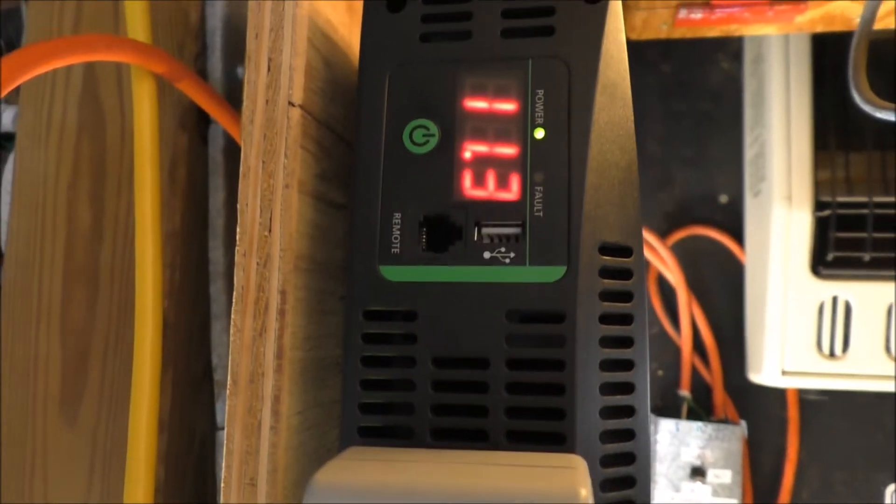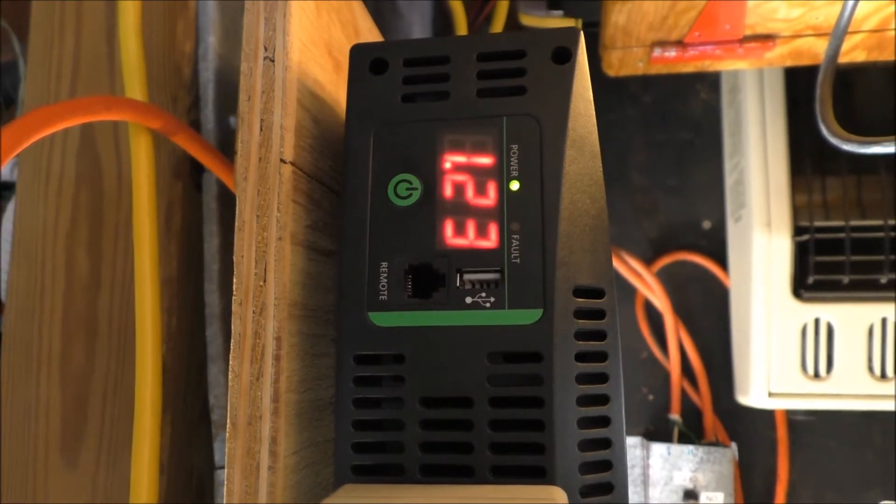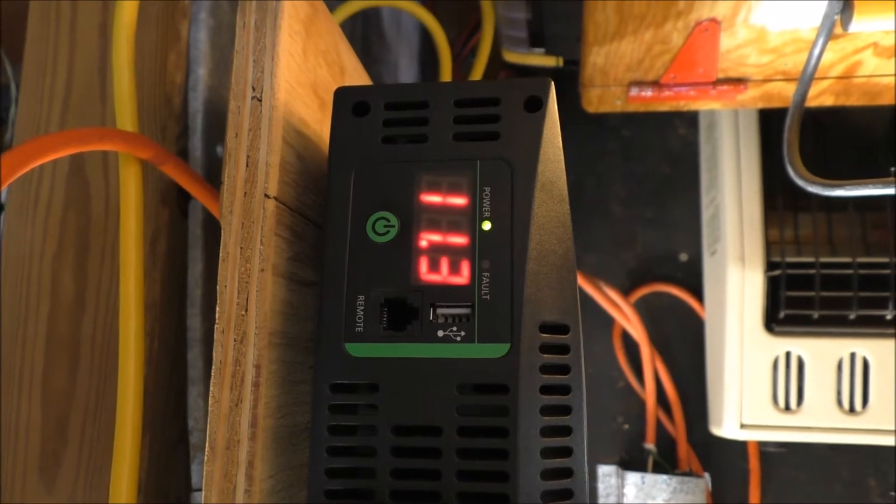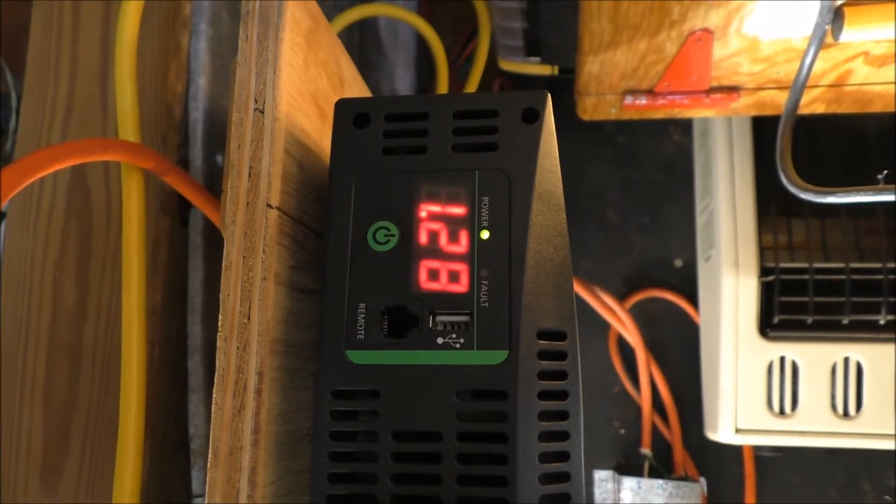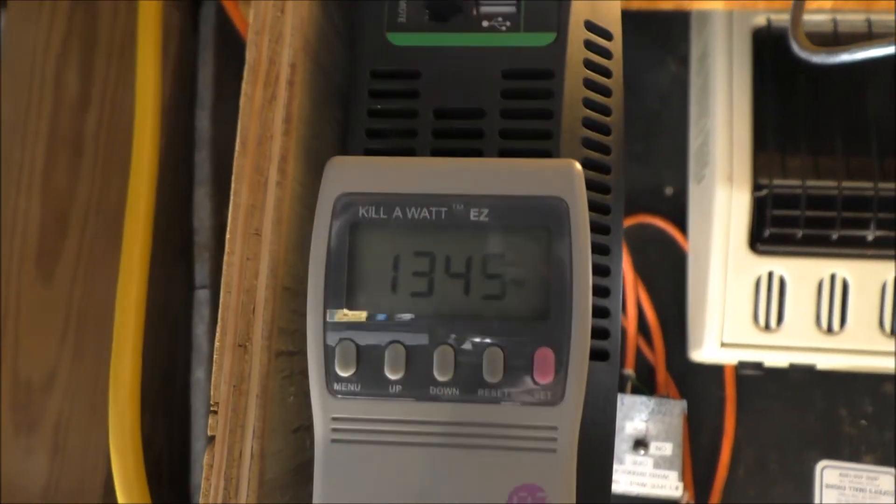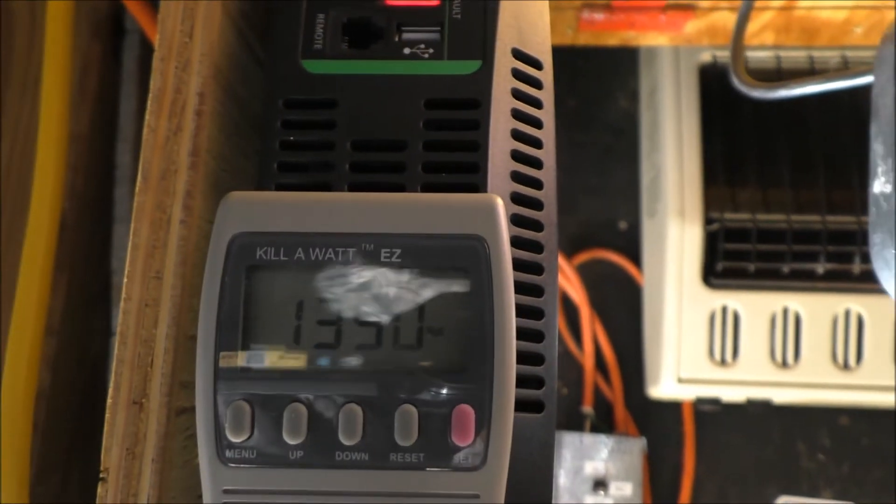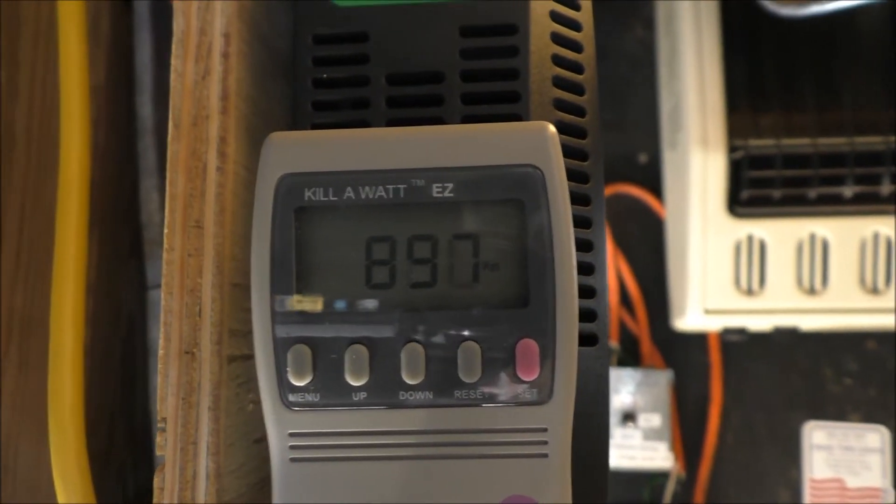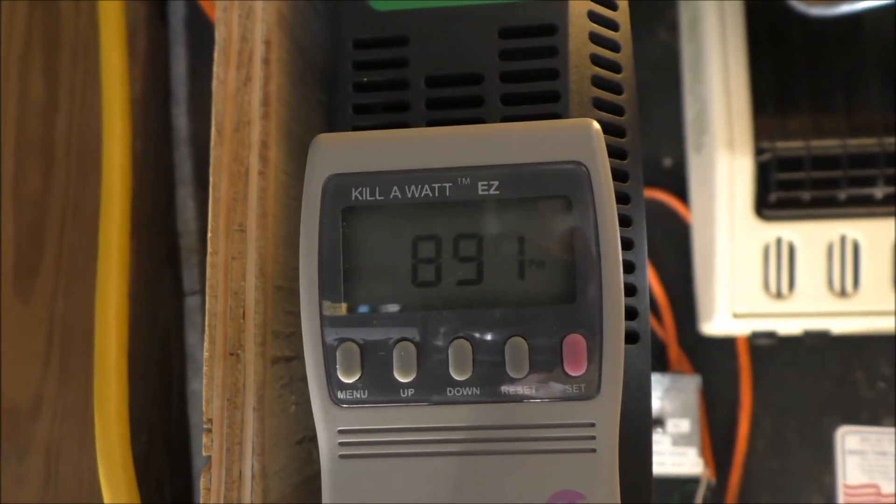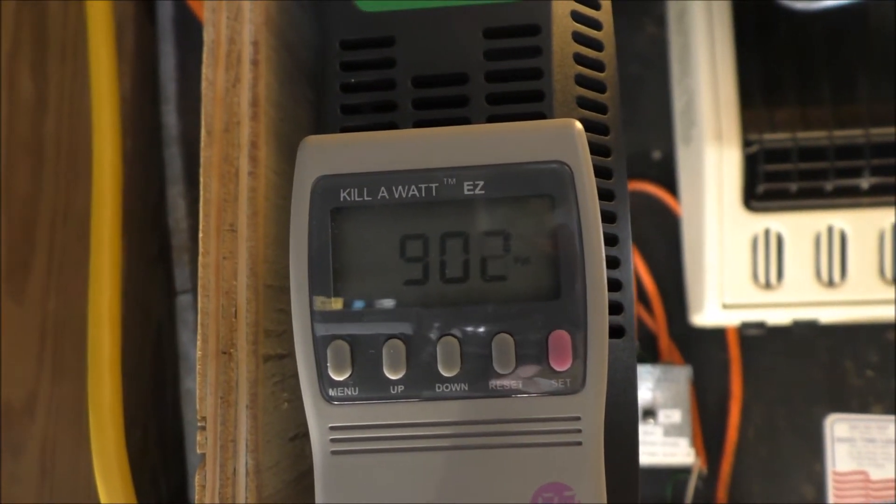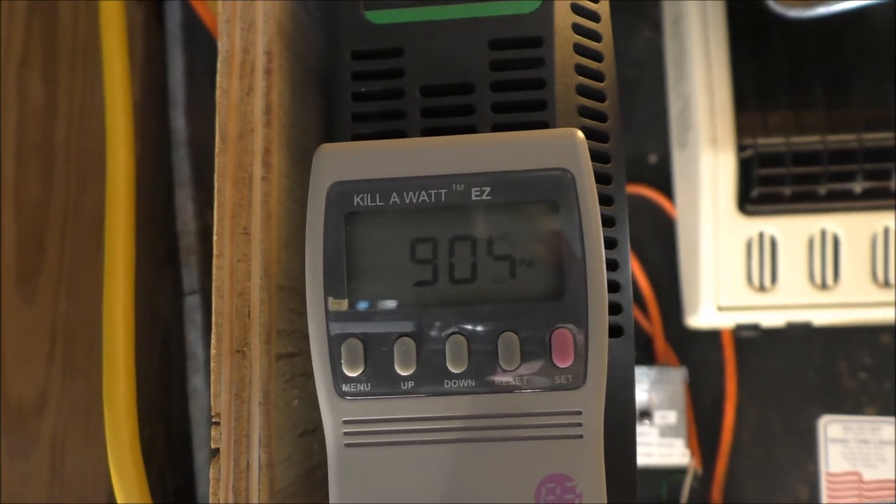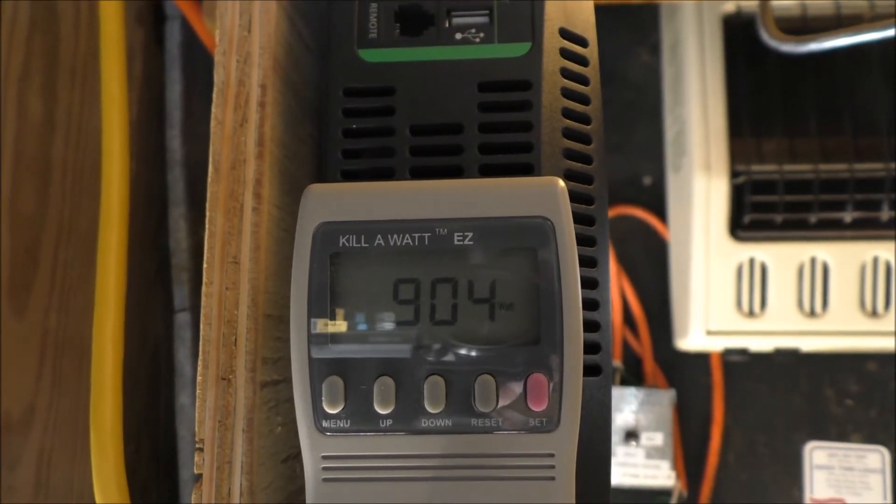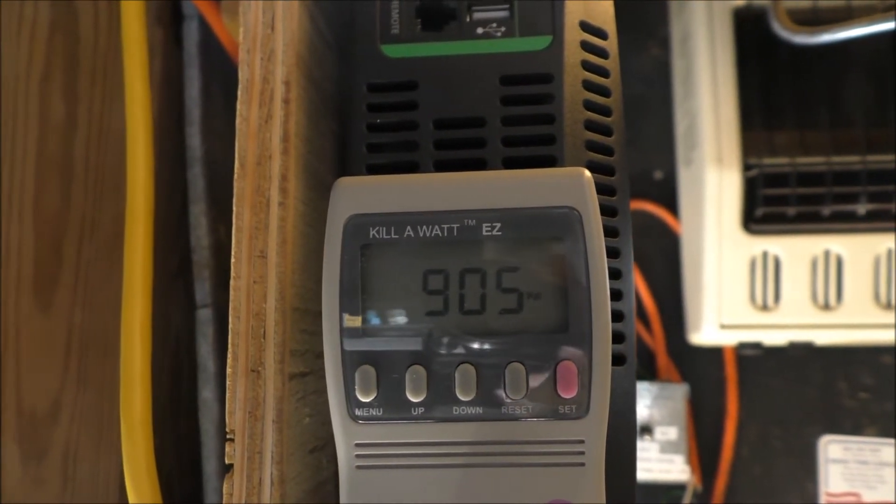On the meter it's showing the power burn through 1200 watts or 11.3 amps. We'll turn it back down to low. This is a Xantrex Pro Watt 2000-watt inverter.